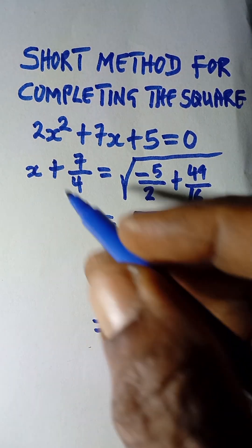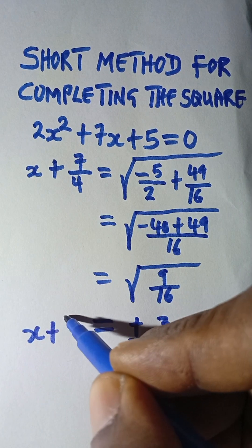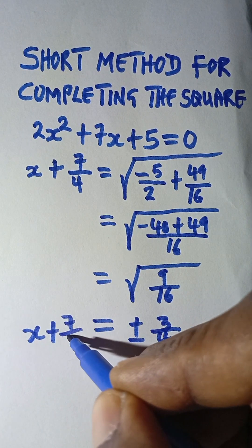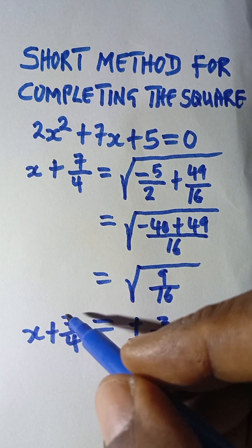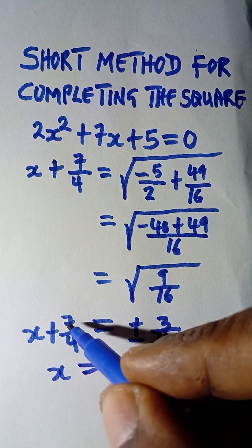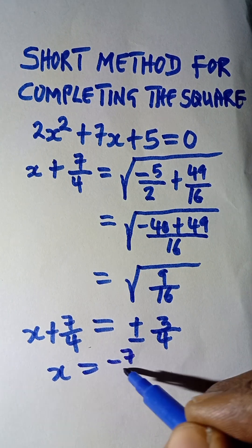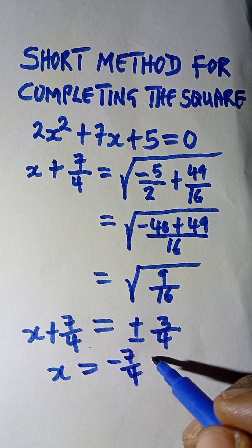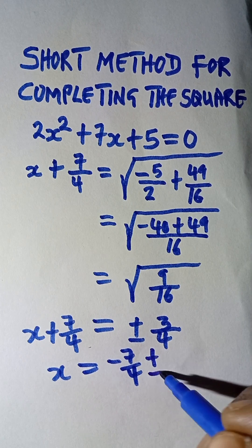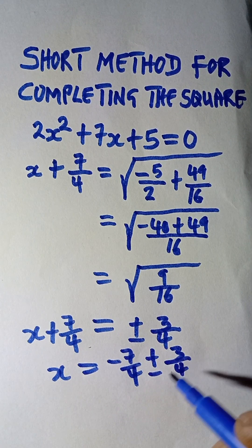Don't forget what you have on the left hand side is x plus 7 over 4. So the next thing now is to take x, which is equal to this. Plus 7 over 4 comes to this side and becomes minus 7 over 4, then plus or minus 3 over 4.